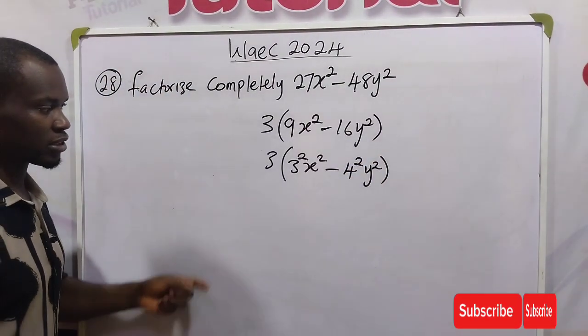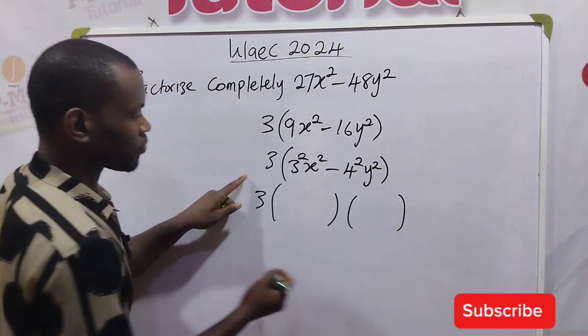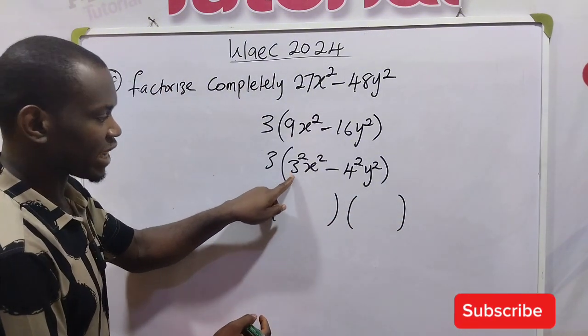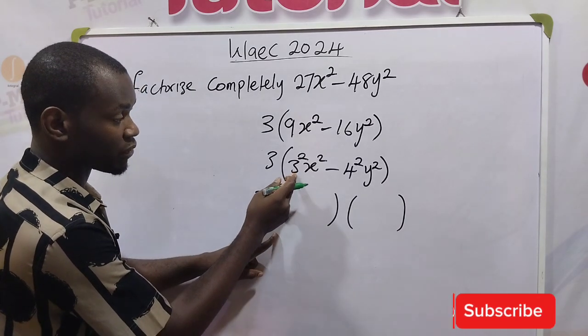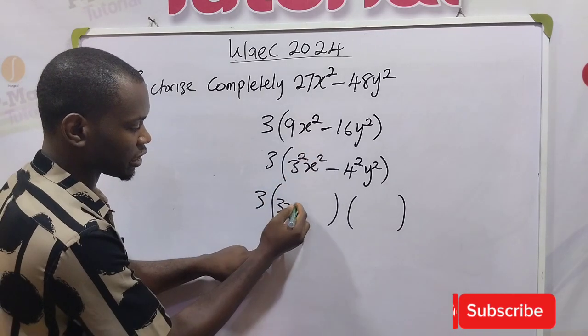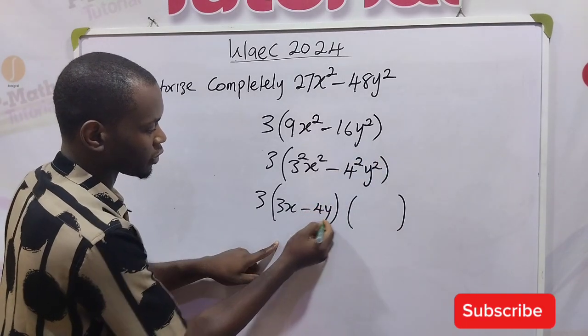This is difference of two squares. So what you need to do is write this 3 outside, create two brackets. Now write the square root of 3 squared and x squared here. That is 3x. Square root of 4 squared and y squared is 4y.